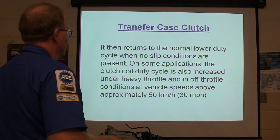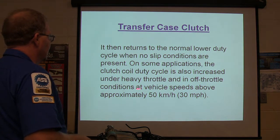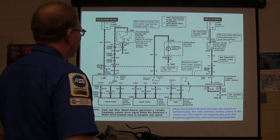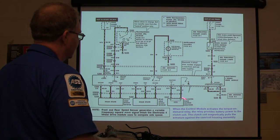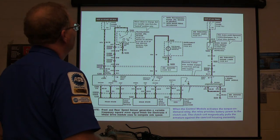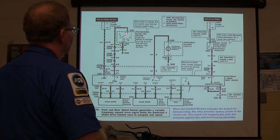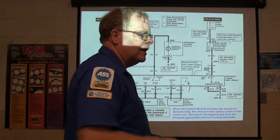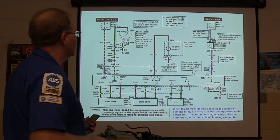This is what the system looks like: your electronic four-wheel drive module, rear axle speed sensor, front axle speed sensor, transfer case clutch solenoid, and the electronic four-wheel drive routing. On the ones that aren't shift-on-the-fly, you've got to have it in neutral before you can change gears.